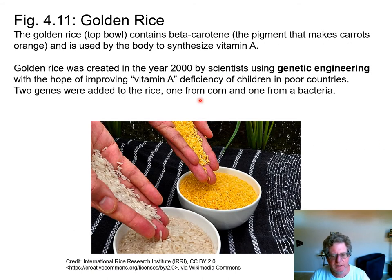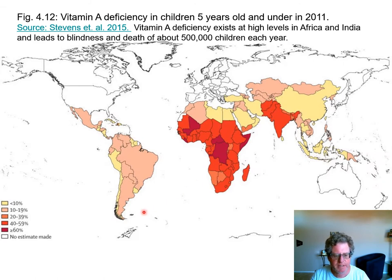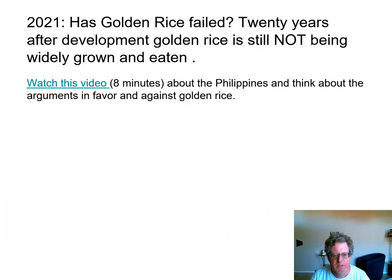This is something called golden rice. It was developed 20 years ago as a solution to vitamin A deficiency. Beta carotene is made by our body into vitamin A, and scientists planned to use it in poor countries so people would have beta carotene in their diet and not be deficient in vitamin A. The highest levels of deficiency are in Africa and India. Vitamin A deficiency can lead to blindness or death — about half a million children under the age of five die or become blind each year due to vitamin A deficiency. Twenty years later, they're still not growing golden rice. Watch the video and your homework will ask for the arguments in favor of golden rice and why countries around the world are still not growing it.